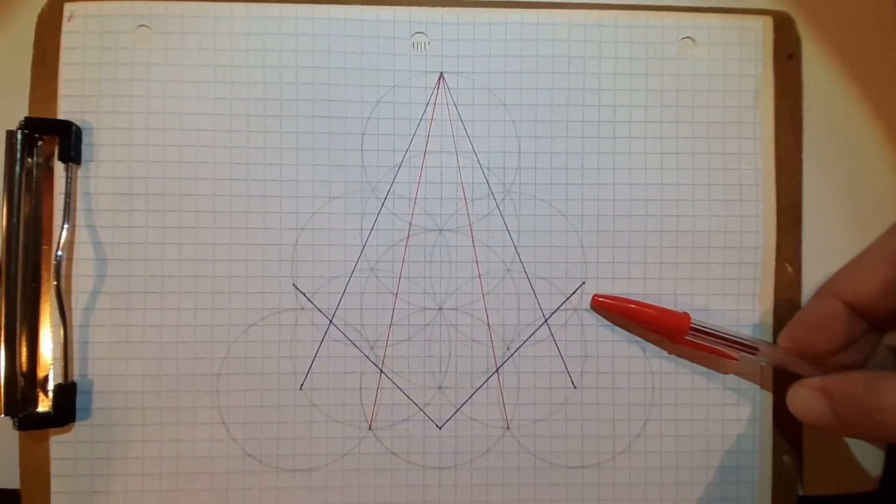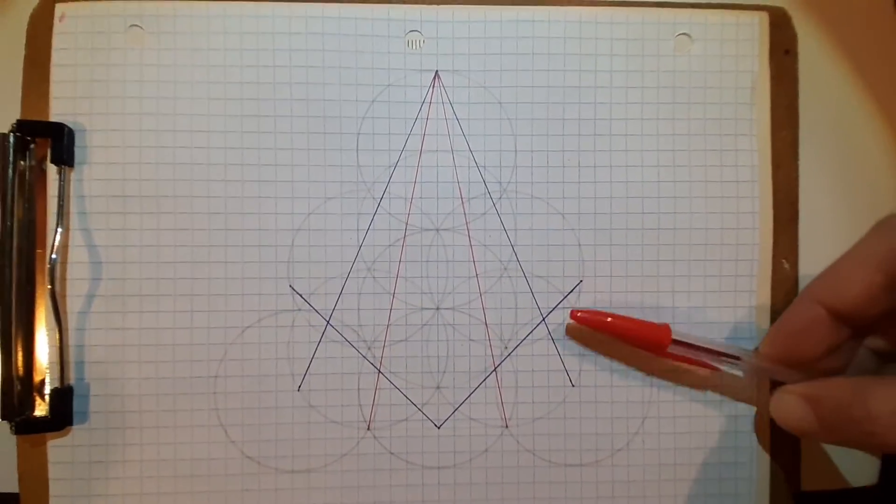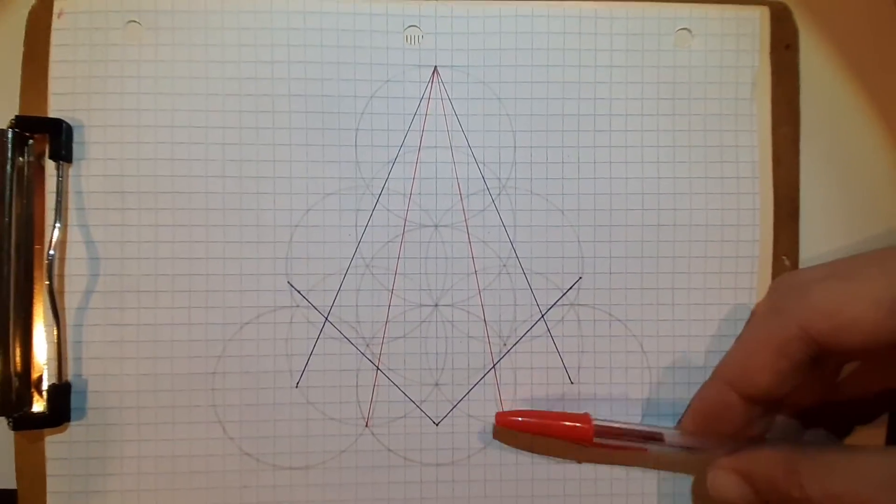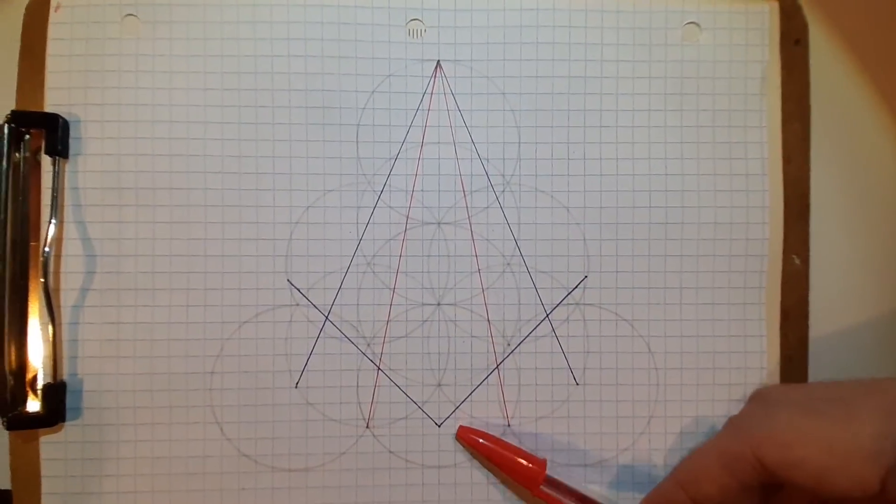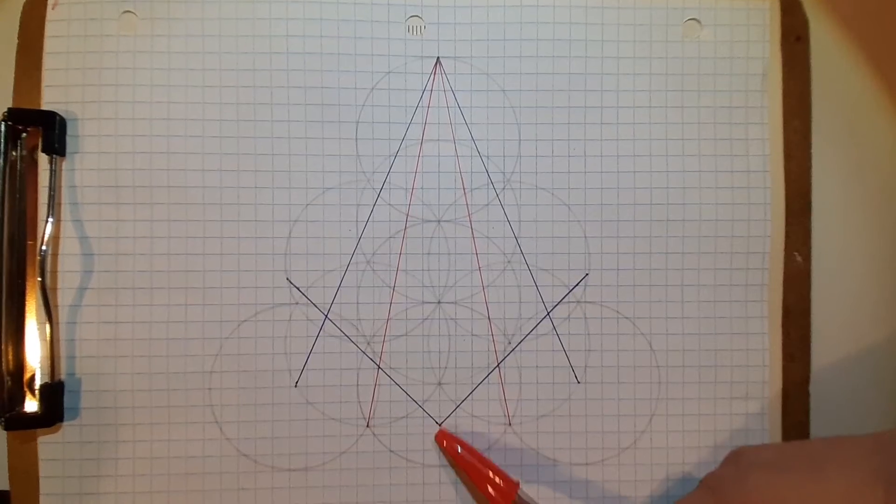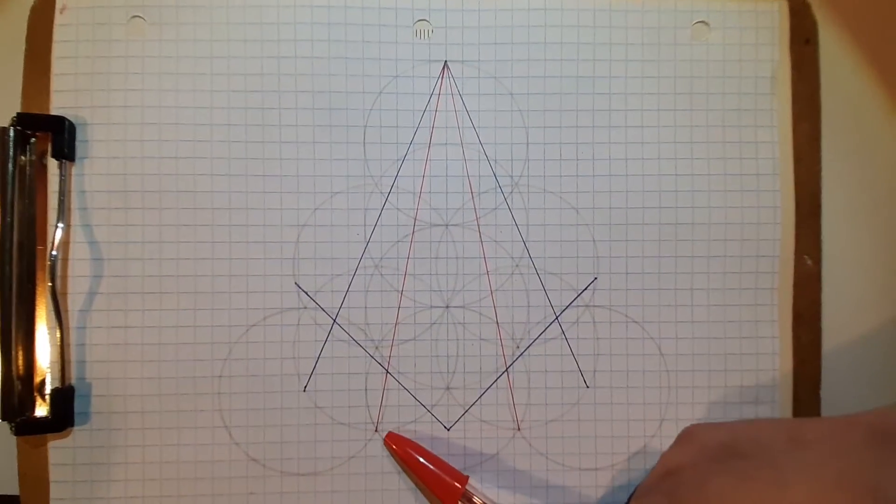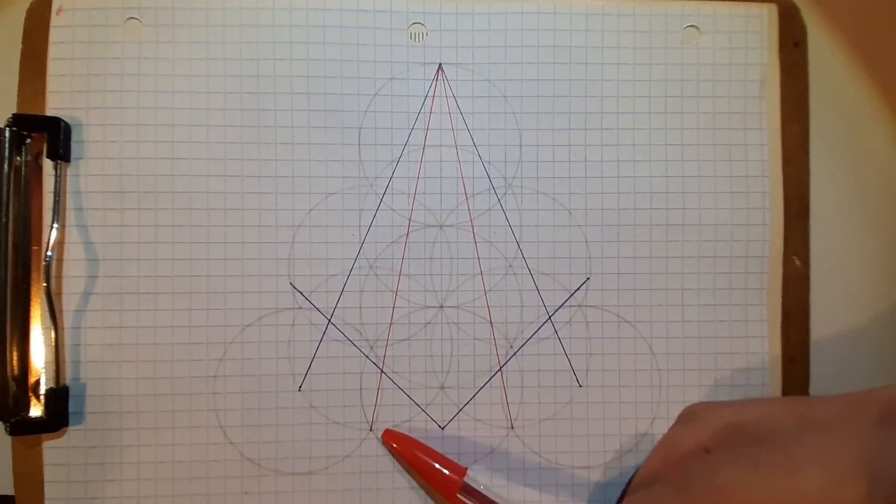If you look at that picture of the compass and square, you'll find that it is identical to this geometrically. Where the square is, the corner of the square is exactly where the line of the 22 degrees.